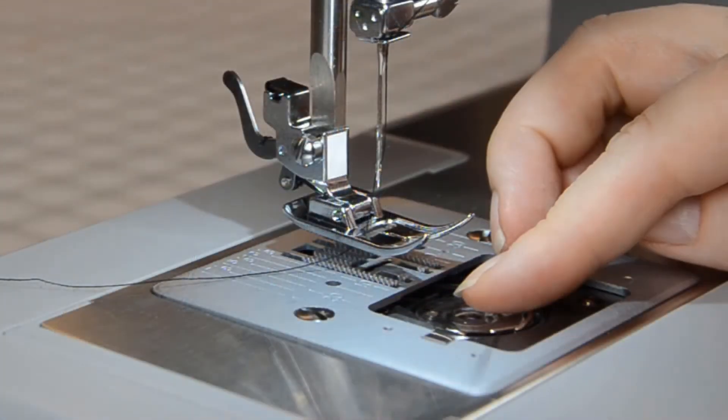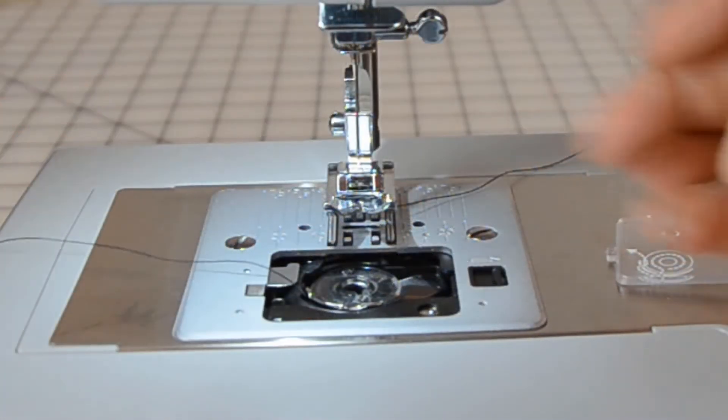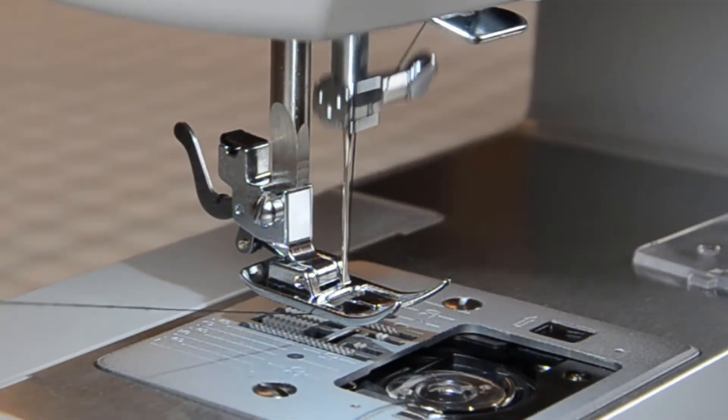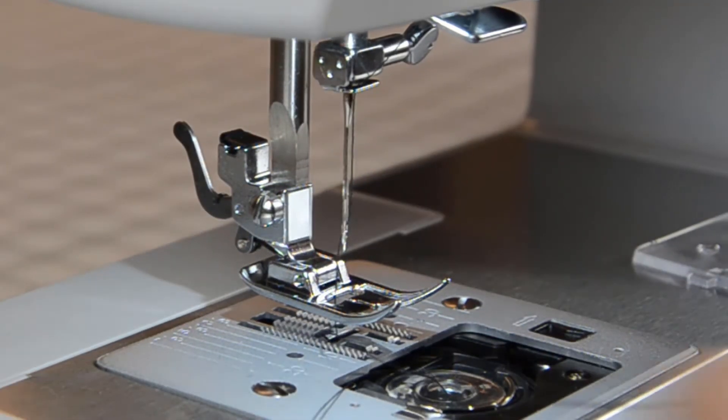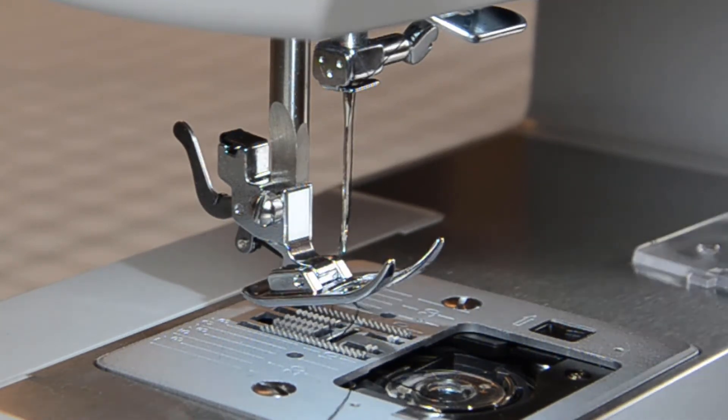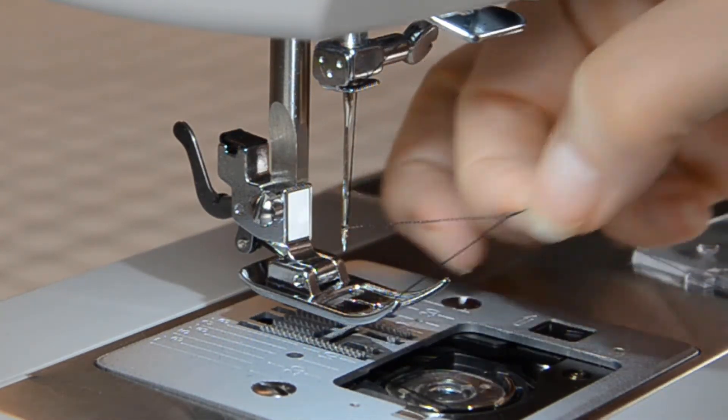To bring the bobbin thread up, hold the end of the thread that is through the needle. Bring the needle down and it should catch the bobbin thread. When it comes up, pull on your thread to gently pull the loop all the way up, then bring the rest of the thread up to the top.